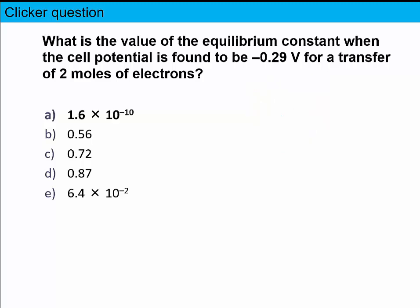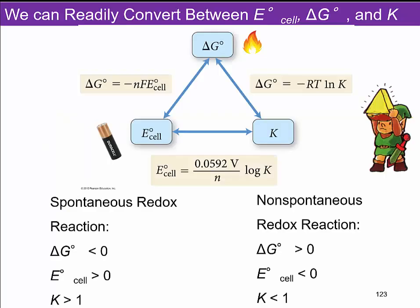The answer is 1.6 times 10 to the minus 10. Now we're linking everything together — we've got the triforce, right? Delta G is our thermodynamic quantity. It relates to both K and to E_cell. There's an interconnection between E and G via minus NFE, and between G and K via minus RT ln K. We can combine them and say E_cell equals 0.0592 divided by N times the log of K.